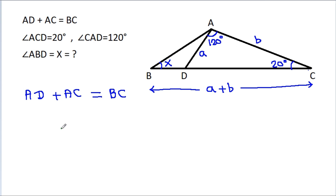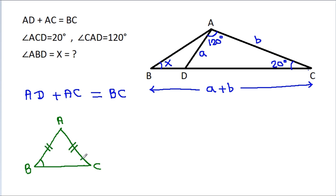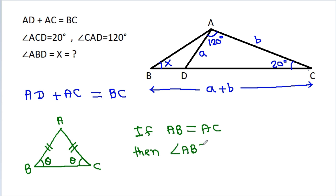In any triangle, if AB is equal to AC, then these two base angles will be equal — that is, angle ABC will be equal to angle ACB.